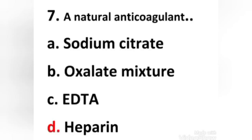Next question: Which of the following is an example of natural anticoagulant — (a) sodium citrate, (b) oxalate mixture, (c) EDTA, (d) heparin. The right answer is option D: heparin. Heparin is a natural anticoagulant. The source of commercial heparin is the mucous membrane of pig intestine and ox lungs. Heparin is a mixture of natural sulfated mucopolysaccharides, which are generally found in granules of mast cells.